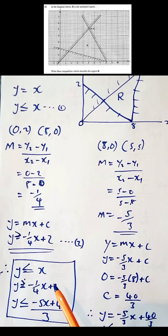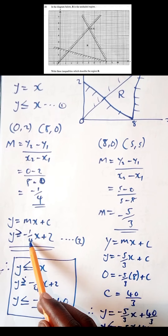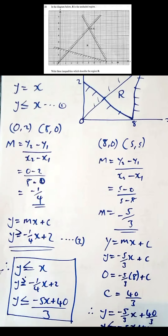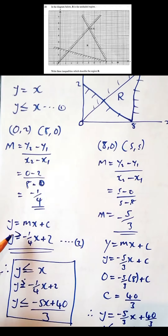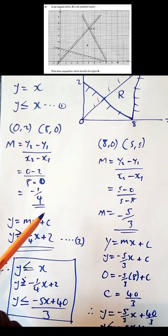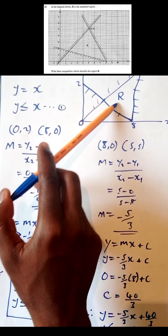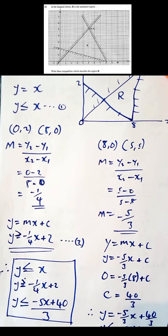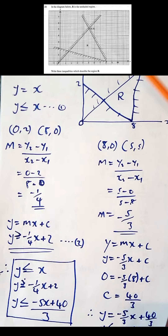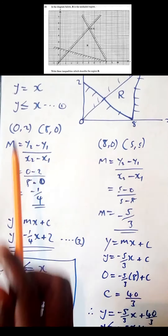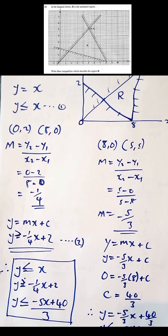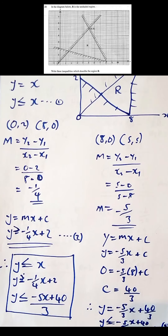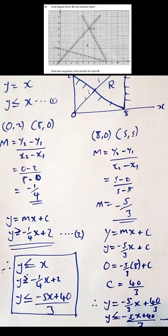Substituting, we get y = -1/4 x + 2, since the y-intercept is 2. The inequality is 'greater than or equal to' because the shaded region is on the greater side of this line, and the line is not dotted — it is a full borderline. So the inequality is y ≥ -1/4 x + 2.